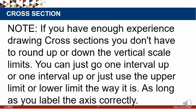If you have enough experience drawing cross sections, you don't have to round up or round down the vertical scale limits. You can go one interval up — if the contour interval was 20 on the last map, you can move from 1660 to 1680. The lower limit can just be 1365, or you can use 1380 the way it is, or 1660 the way it is. Experienced people use the values as they are.